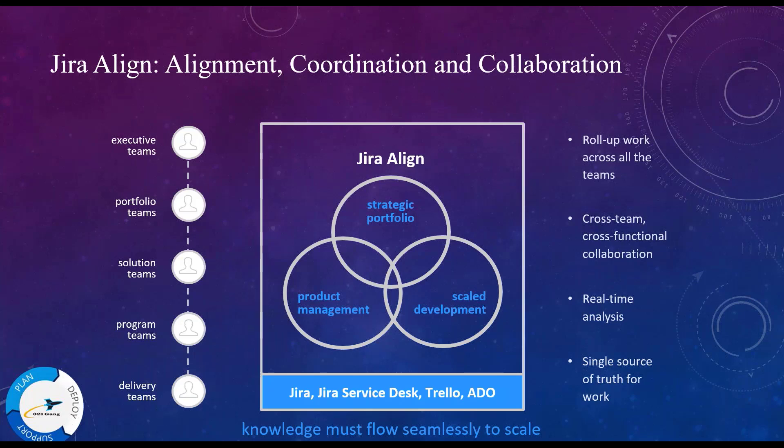Jira Align was built to solve the challenge of agile at scale. It has a tight integration with industry-leading team-based tools such as Jira, Azure DevOps, and Trello, so that individual teams can continue to use their preferred tools, but program leadership and executives can see the rolled-up data in Jira Align.